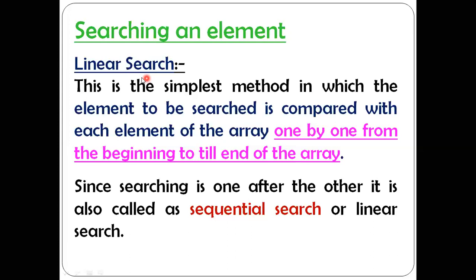Linear search is the very simplest method of searching, in which the element to be searched is compared with each element of the array one by one, from the beginning to the end of the array. If the searching element is present at the first position, we note its position and exit. If it's at the last position, we compare from beginning to end. This is also called sequential search.